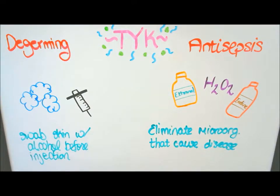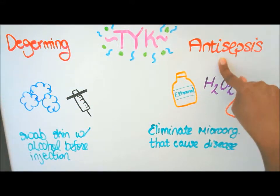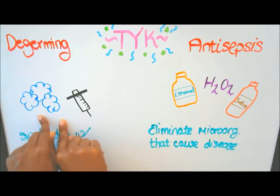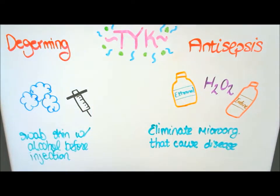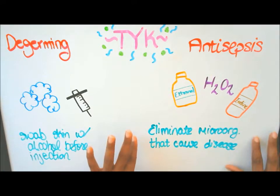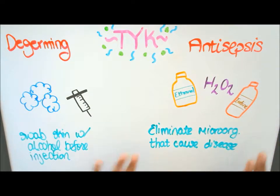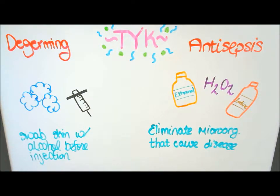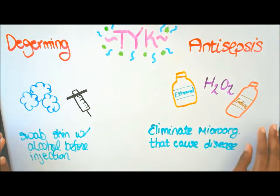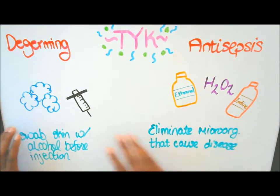Next we have de-germing and antisepsis. Examples include cotton balls, a needle, ethanol, hydrogen peroxide, and iodine. Match the terms and definitions: 'eliminate microorganisms that cause disease' and 'swab skin with alcohol before injection' — draw lines to the correct examples.